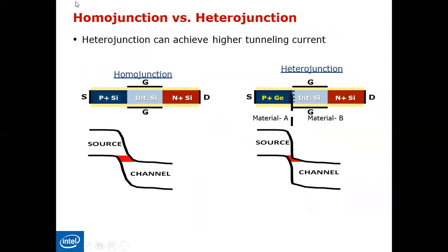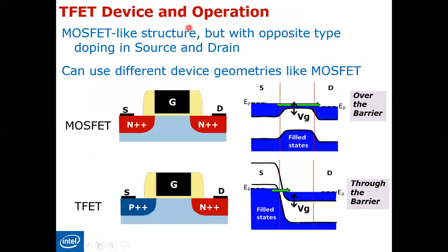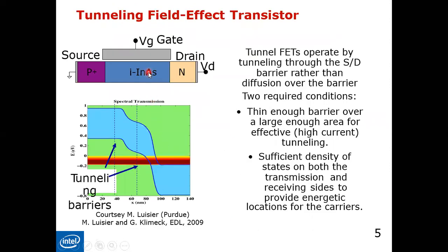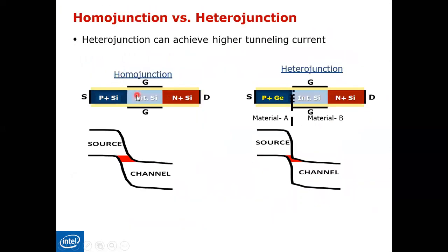Now let's turn to another type of TFET, which is the heterojunction TFET. You know what's meant by heterojunction — we already studied it at the end of the metal-semiconductor junction section. A heterojunction means implementing a semiconductor junction using two different types of materials, such as indium arsenide on one side with a different material on the other. The heterojunction TFET shows very good results in the literature and is one of the interesting flexibilities of the TFET.